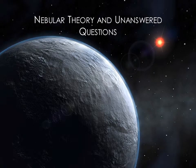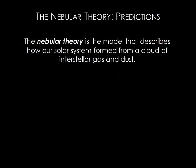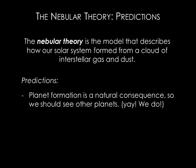The nebular theory of solar system formation has been the accepted model for decades, and it has only been recently that we've been able to obtain observations to test this model. The nebular theory describes how our solar system formed from a cloud of interstellar gas and dust. In this model, planet formation is a natural consequence of processes that accompanied the formation of our Sun. If the theory is correct, then the same processes should accompany the births of other stars, and the nebular theory clearly predicts the existence of other planetary systems.